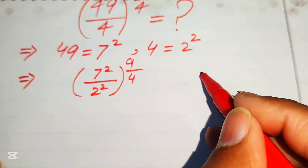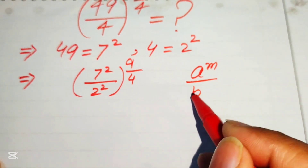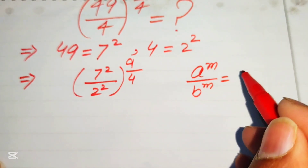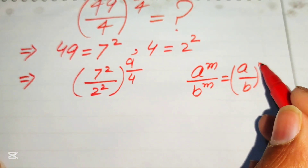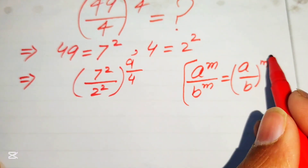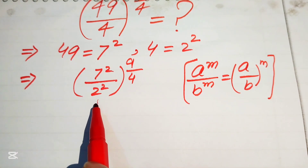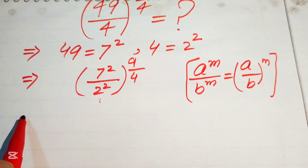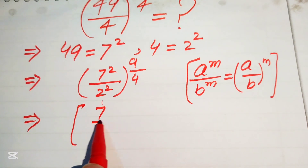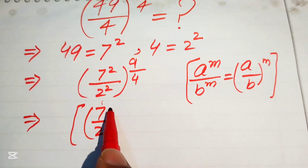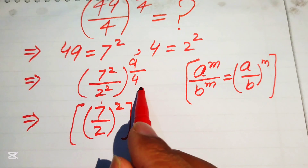After this step, we use the exponent law: if we have a to the power of m divided by b to the power of m, we write it as (a over b) to the power of m. According to this exponent law, we combine the exponent of these two terms and write it as 7 over 2, whole squared, with exponent 9 divided by 4.